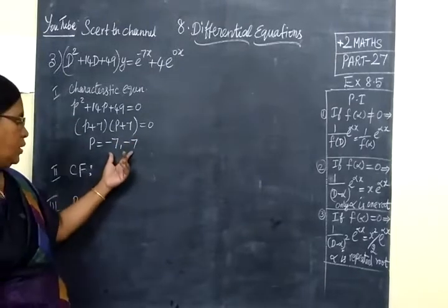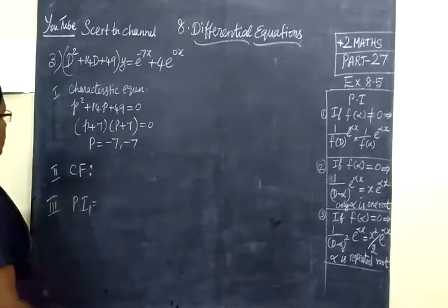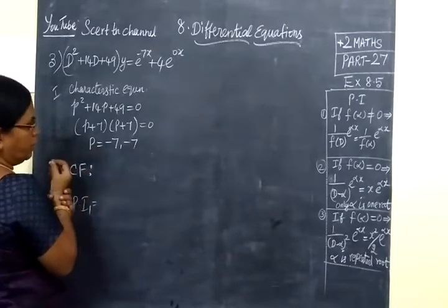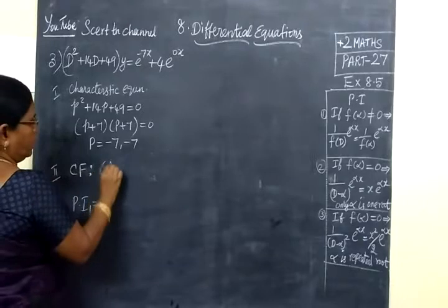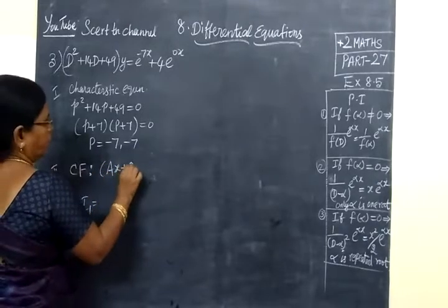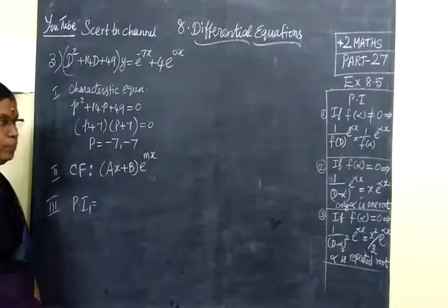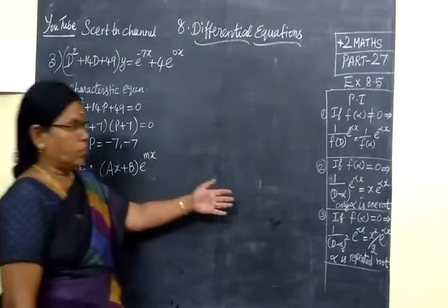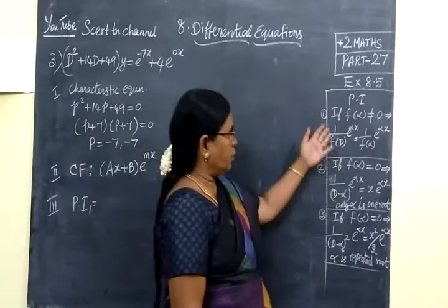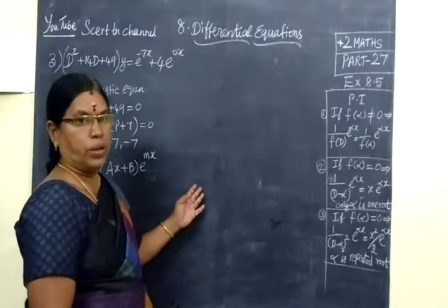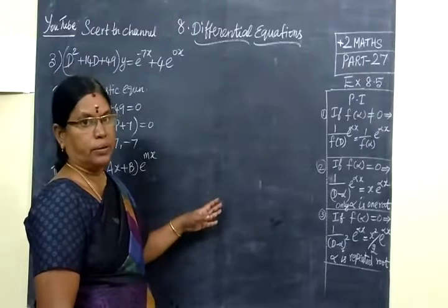Now the complementary function. For repeated roots, the form is (Ax + B)e^(mx). This is the form for CF. At the right side we have to find the particular integral. If the roots are distinct and real, we handle it differently.